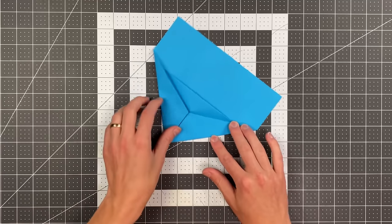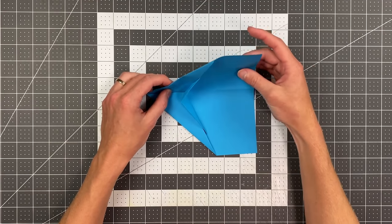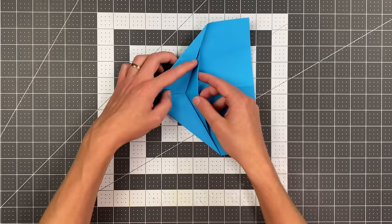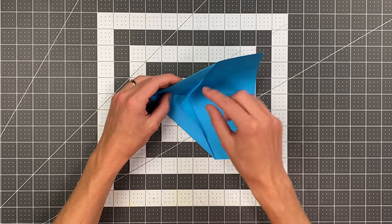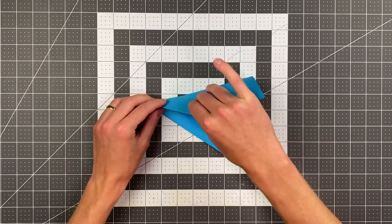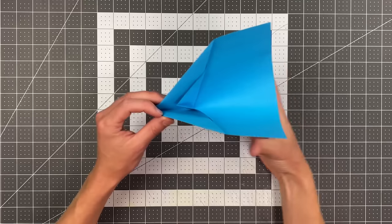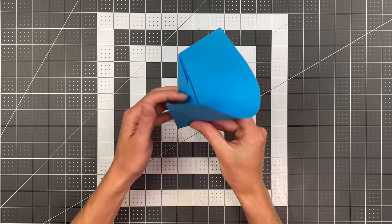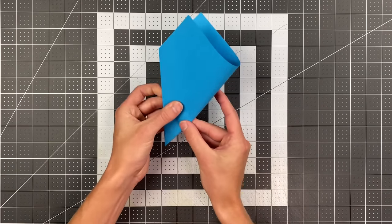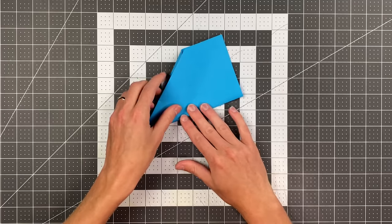So as I fold my plane in half here you can see it kind of wants to swing forward. If yours isn't doing that just encourage it to do so. Let that swing all the way forward as you fold your plane in half.